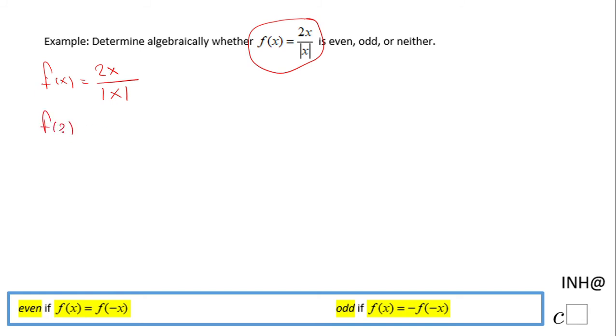That becomes 2 times 2 over absolute value of 2. 2 times 2 is 4 over absolute value of 2 is 2, and we end up with 2. Similarly, I'm going to do f of negative 2, which becomes 2 times negative 2 over absolute value of negative 2. 2 times negative 2 is negative 4, and absolute value of negative 2 is positive 2, so we end up here with negative 2. If you notice, these two are not equal; they are opposite. f of 2 is negative f of negative 2.